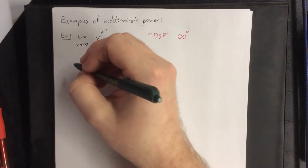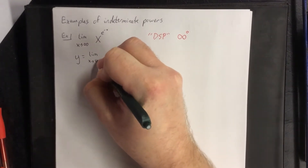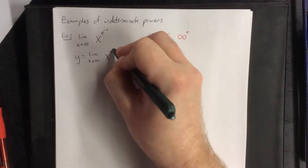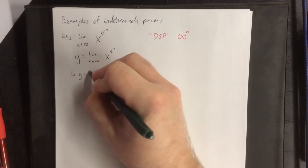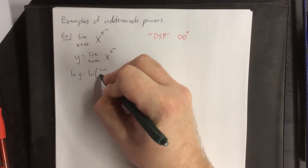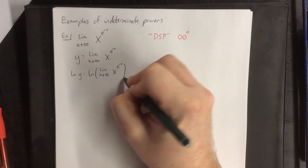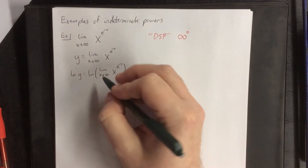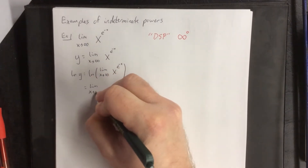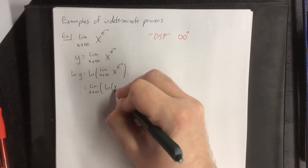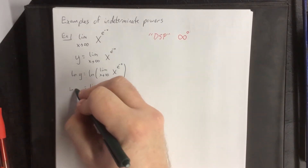Following the process from the last video, we're going to assume that the limit exists and give it a variable name — y. After we have an equation, we apply a natural log to both sides, getting that the natural log of y is equal to the natural log of the limit as x goes to infinity of x raised to the e to the negative x power. Then we apply continuity to move the natural log to the inside of the limit.